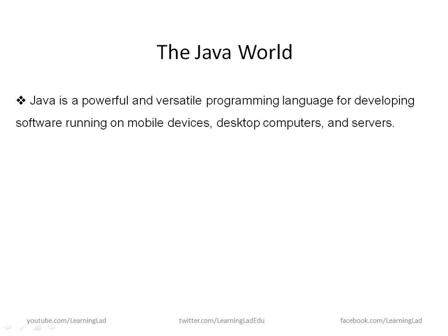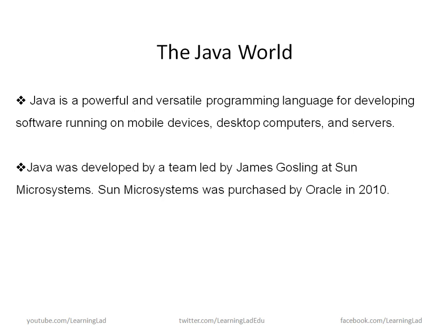So let's get started. First of all, what is Java? Java is a powerful, versatile programming language for developing software running on mobile devices, desktop computers, or servers. Java was developed by a team led by James Gosling at Sun Microsystems, and Sun Microsystems has been purchased by Oracle in 2010. Java was originally called Oak, and in 1995 the name was changed to Java.